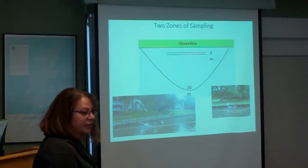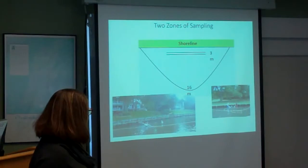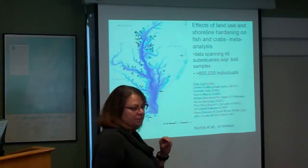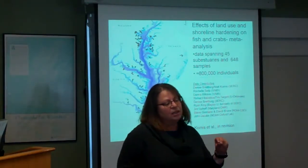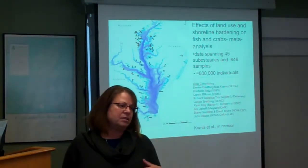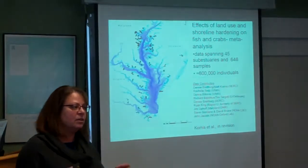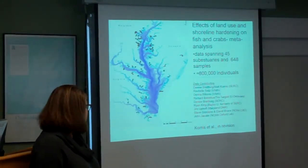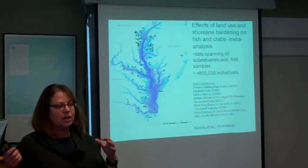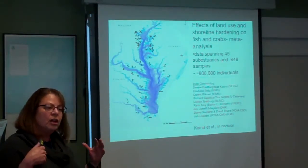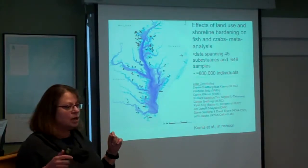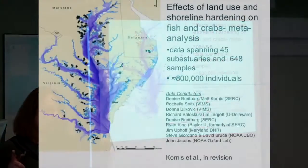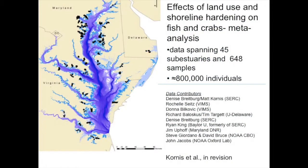What we did is our group did three years of sampling in an essentially randomized block design. At about 25 sub-estuaries, we sampled two sites of each shoreline type — one with the big nets and in both cases we used small nets.